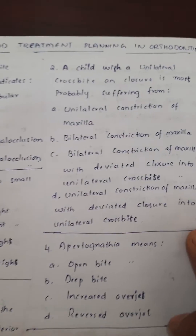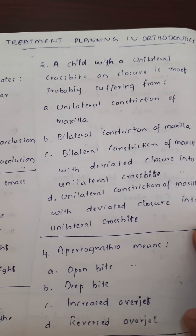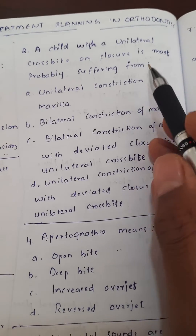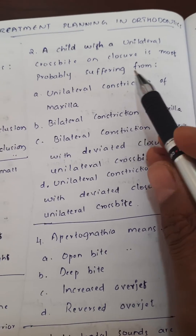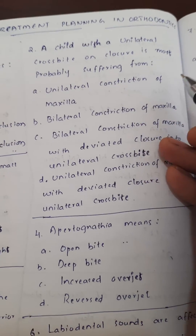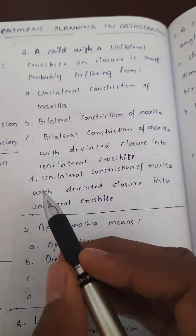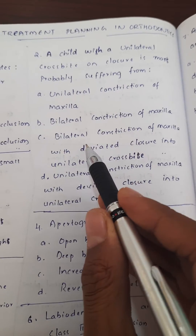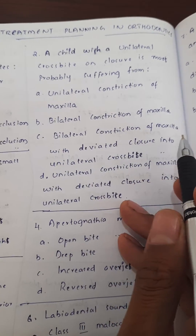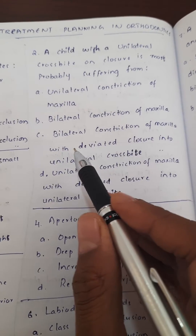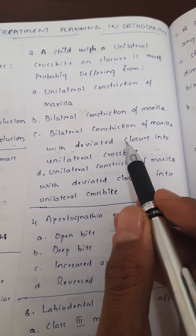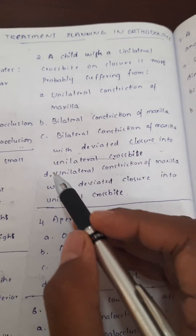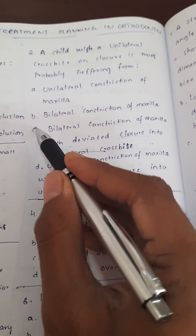The second question: a child with a unilateral crossbite on closure is most probably suffering from bilateral constriction of the maxilla with deviated closure into a unilateral crossbite. That is the answer.